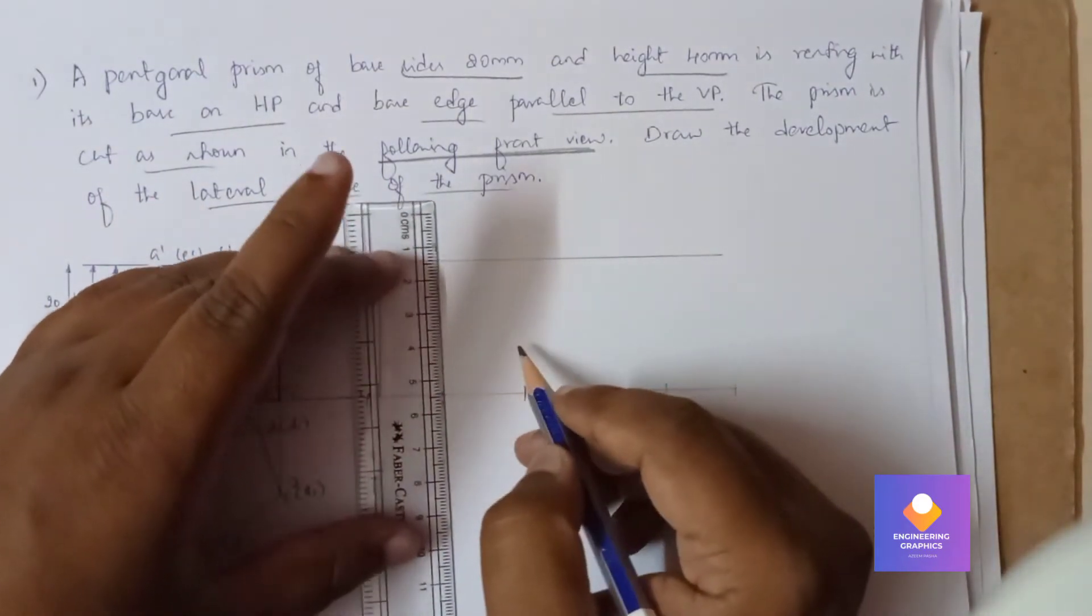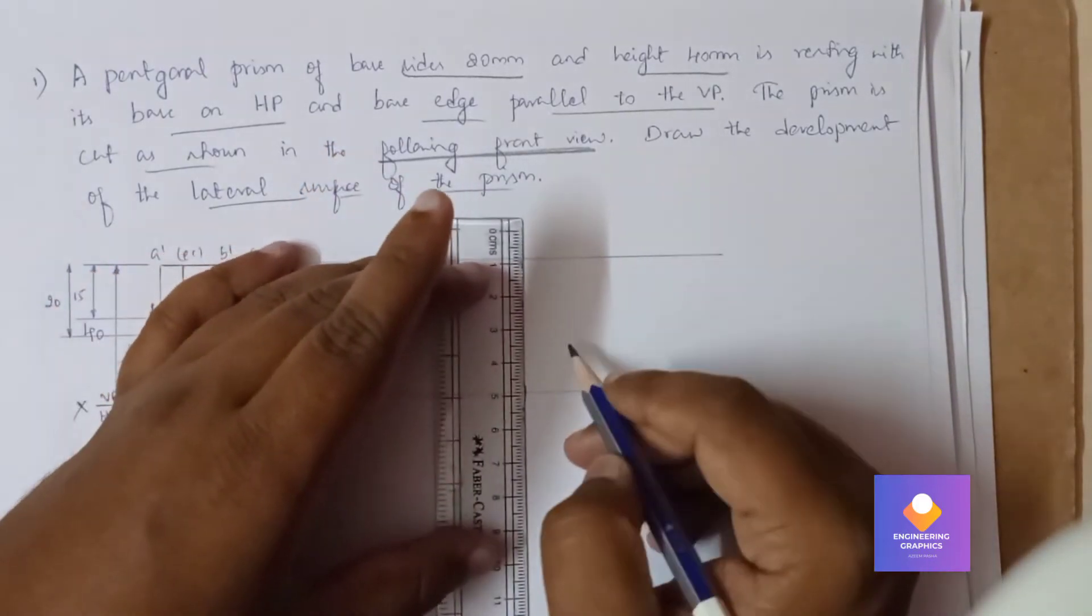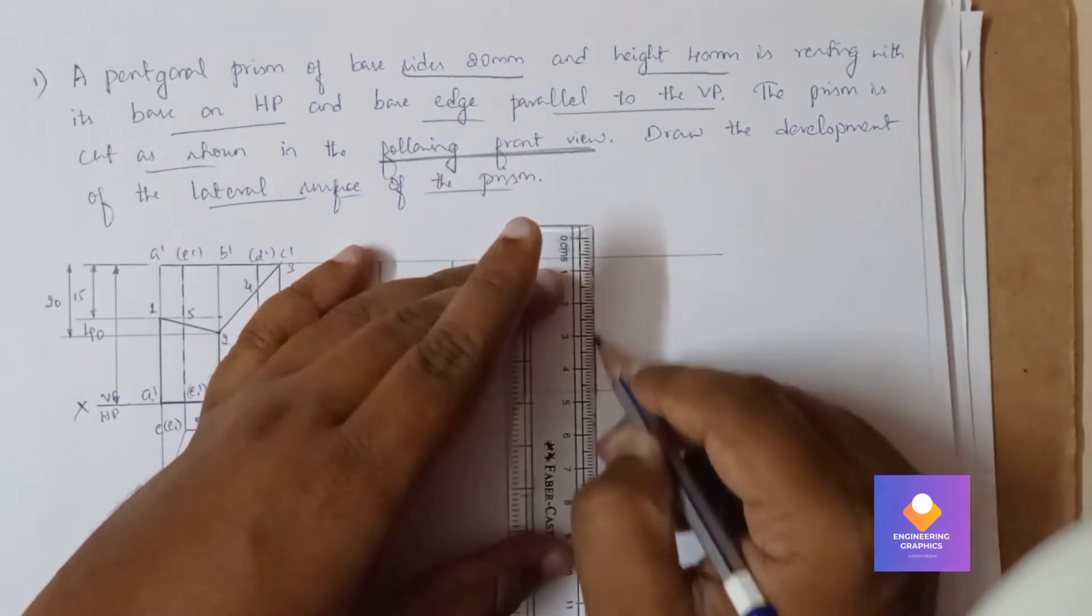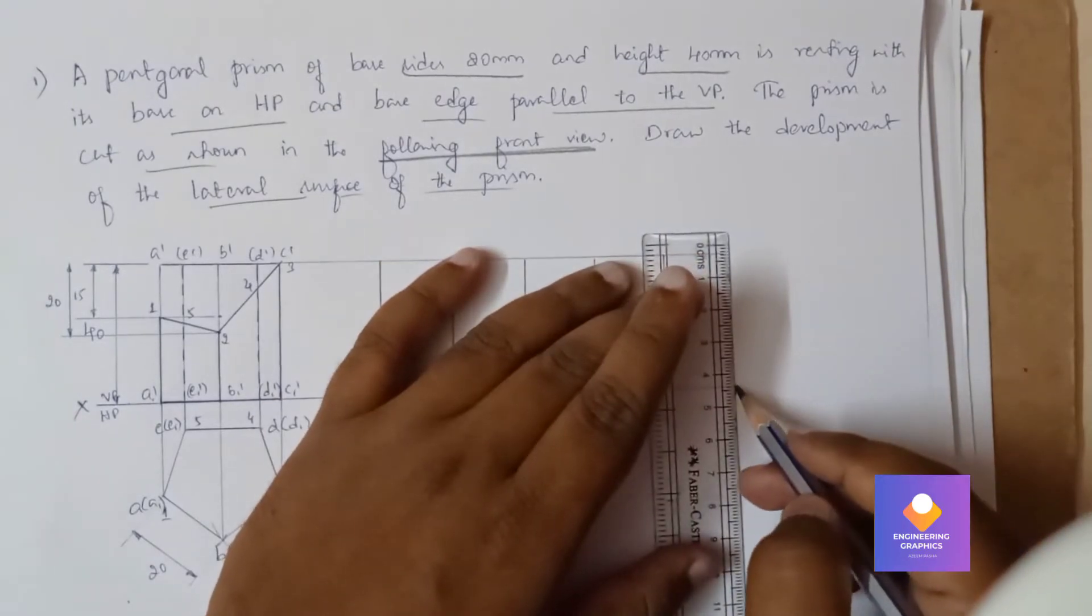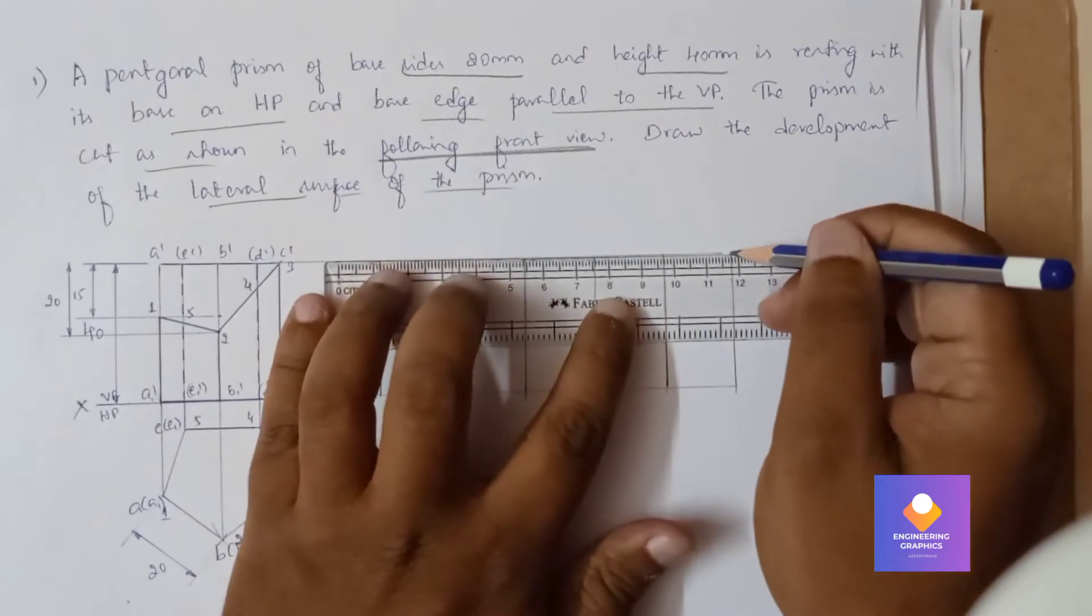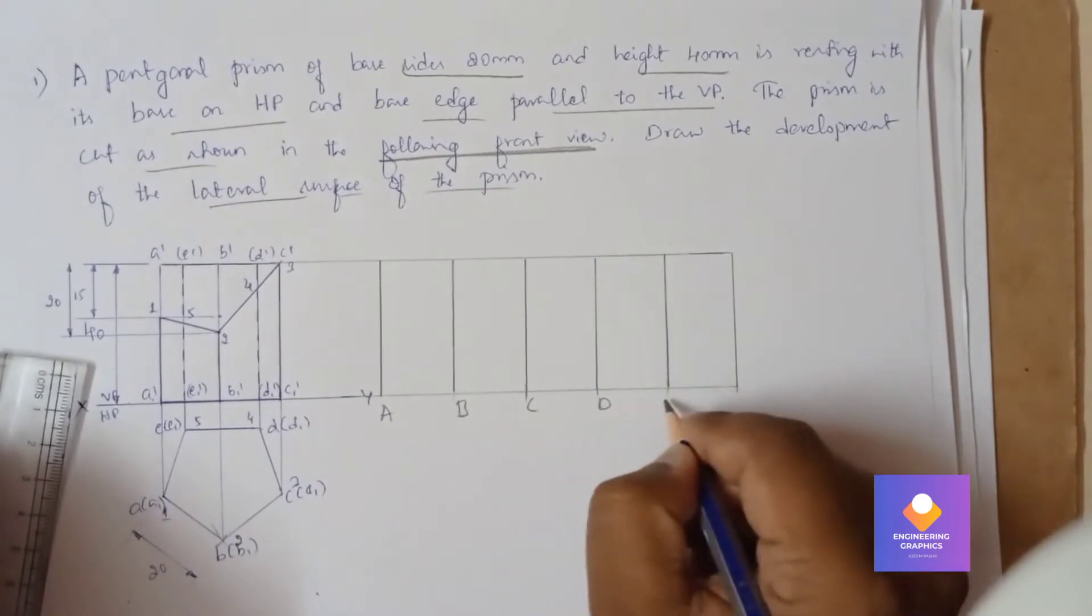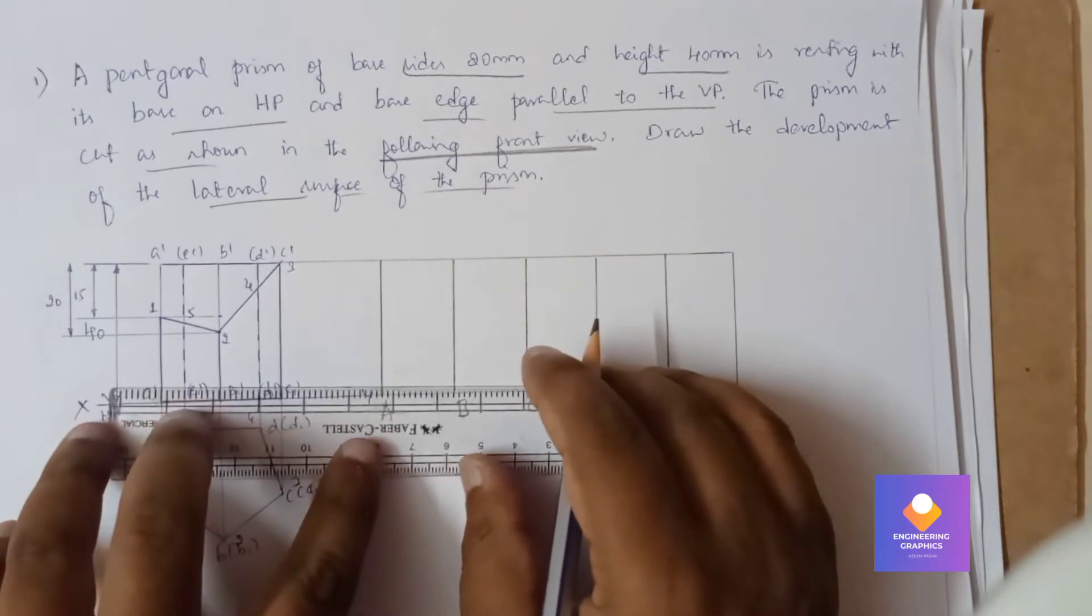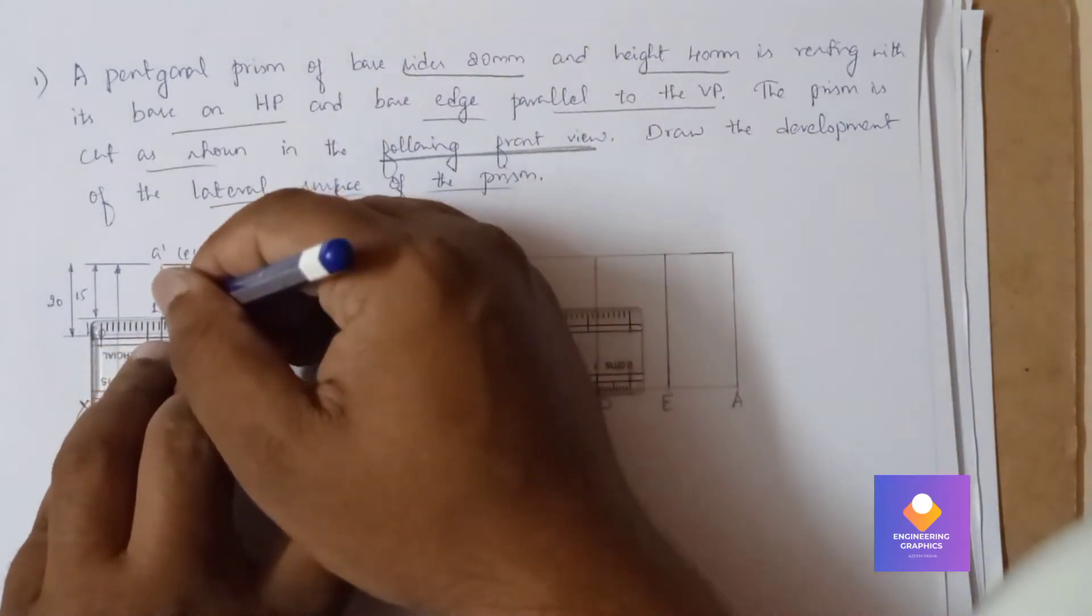Now draw vertical lines passing through these points. We have to extend A, B, C, D, E, and A. You can see we have already marked points, we just need to extend. So I will extend point one to line A.